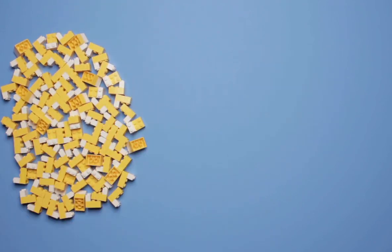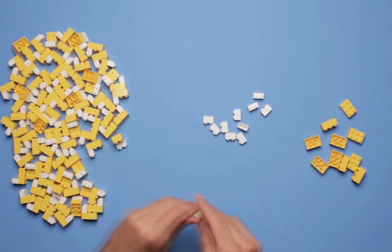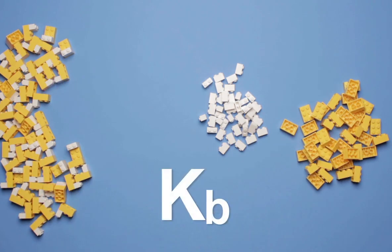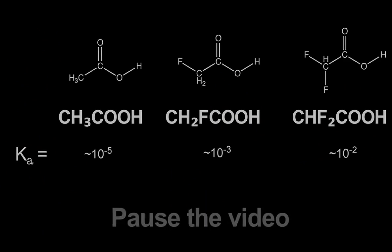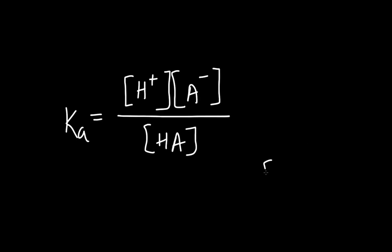As before, we'll start with the acid. Here are 100 molecules of a generic weak acid, HA. Remember, weak acids don't dissociate completely when dissolved in water. The extent to which a weak acid or base dissociates is related to the equilibrium constant, Ka, for an acid or Kb for a base. These equilibrium constants depend on the chemical structure of the acid or base. Pause the video here and write the equilibrium expression for a weak acid.